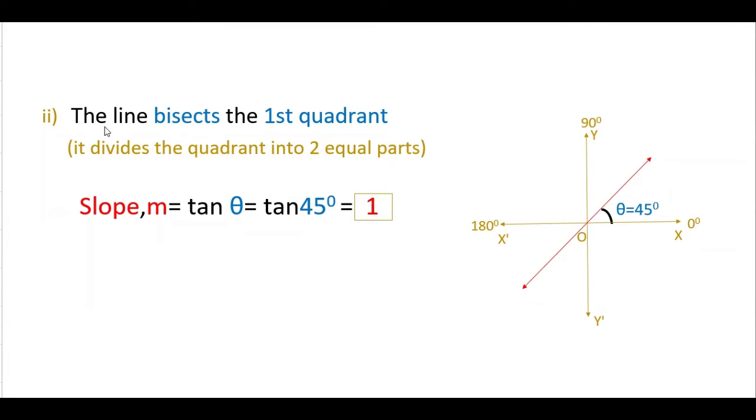This is the second question. The line bisects the first quadrant. So in this option, the line bisects the first quadrant. Bisects means it divides this quadrant into two equal parts. So here it is 90, you have to divide into two equal parts, that means 90 by 2, that is 45 degrees.